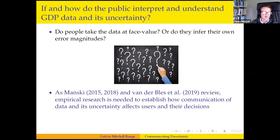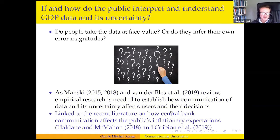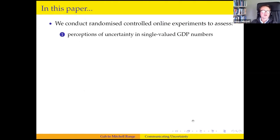Our work picks up on calls, particularly from Charles Manski and also joint work Anna Galvao and I undertook with Martha van der Bless and David Spiegelhalter, calling for more empirical experimental research of this type — both in economics and in a wider interdisciplinary context. This also echoes recent literature on how central bank communications affect the public's understanding or expectations of inflation. In this project we assess: first, perceptions of uncertainty in single-value GDP numbers; second, how the public's understanding is affected by communicating uncertainty in different qualitative and quantitative ways; and finally, whether communicating uncertainty affects trust in the data and its producer.